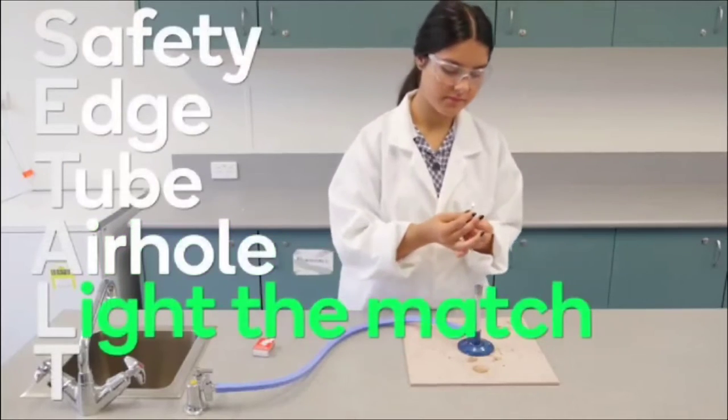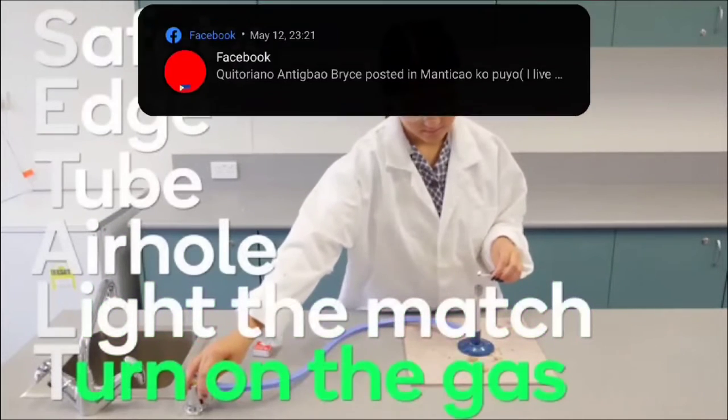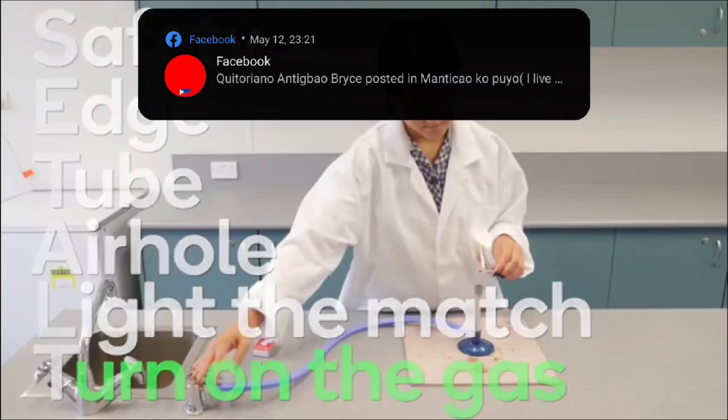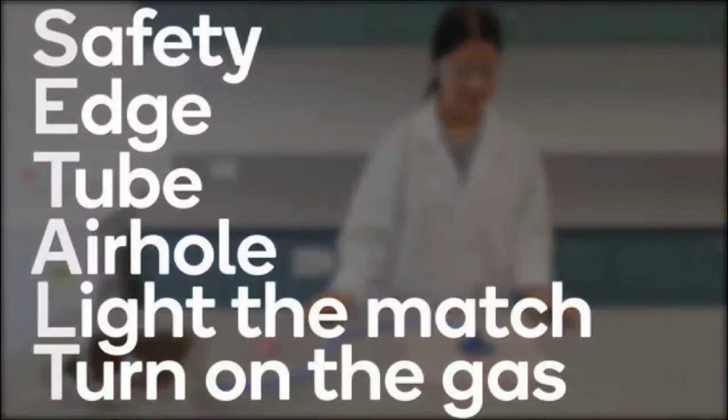Okay, you're ready to light the match and hold it above the barrel. Finally, you can turn on the gas. It's important to light the match first to avoid releasing dangerous gas into the air. You should always follow these six steps when lighting a Bunsen burner.